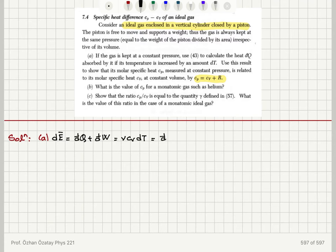So this will be equal to d bar q minus p bar dv. I can write this as d bar q minus nu rt over v dv using the ideal gas law because p bar v is nu rt. So I have for d bar q, nu cv dt, which is d e bar plus p bar dv.